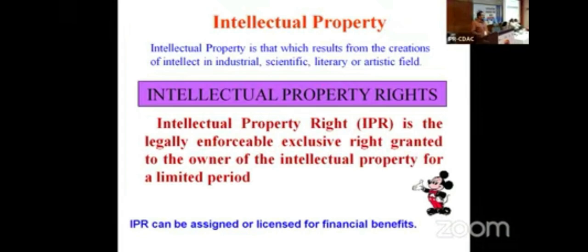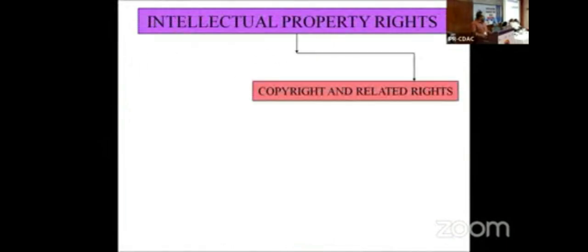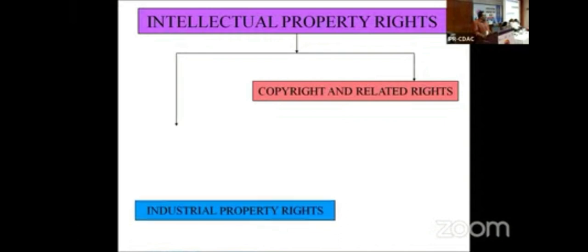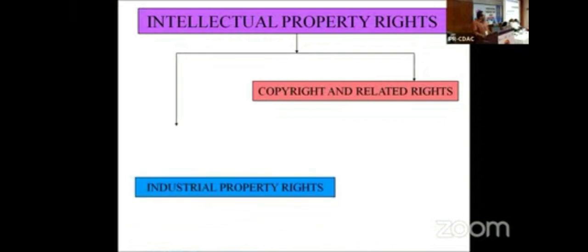IPR can be assigned — just like selling your house, you can assign your IP to another person. Or just like leasing property, you can license it to another person. These are the various kinds of intellectual property rights: copyright and related rights form one category, and the rest is called industrial property rights — patents, rights on designs, trademark, geographical indications, IC layout and design.